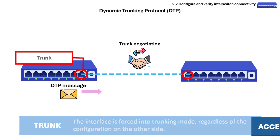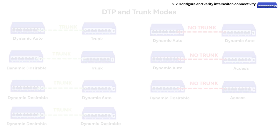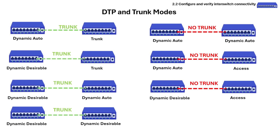In Access mode, the interface is forced into access mode and will not participate in trunk negotiation. It will also stop sending and processing DTP frames. As a summary, you can check the table below for the function of the different DTP modes.